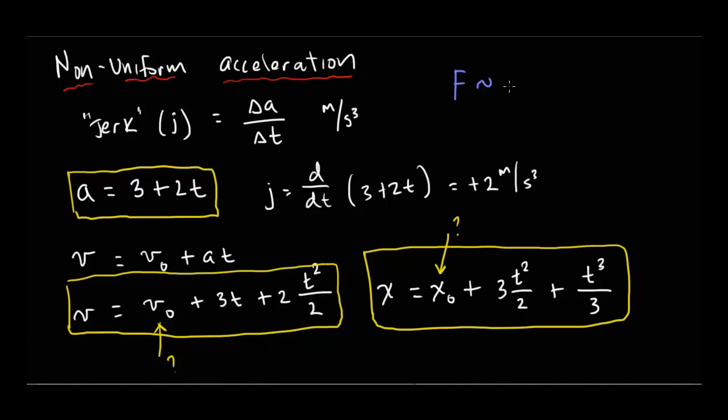The force and acceleration are directly proportional. So you're going to have a constant acceleration with a constant force. But what if the force isn't constant? What if you have a variable force? Well, that's the case where if you have a variable force, you're going to get some non-uniform acceleration.